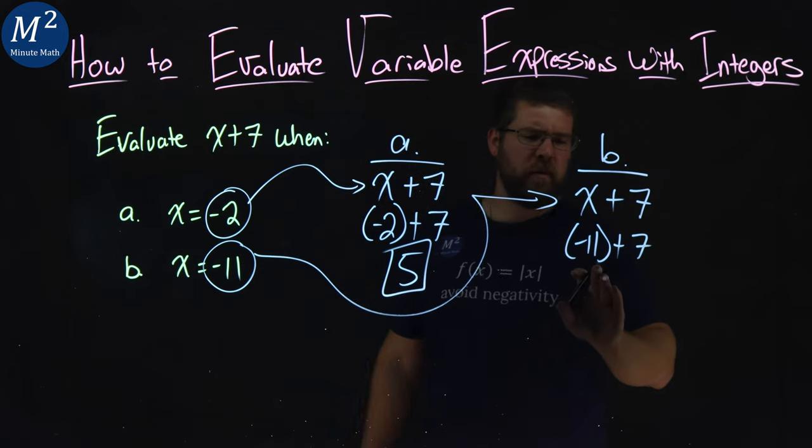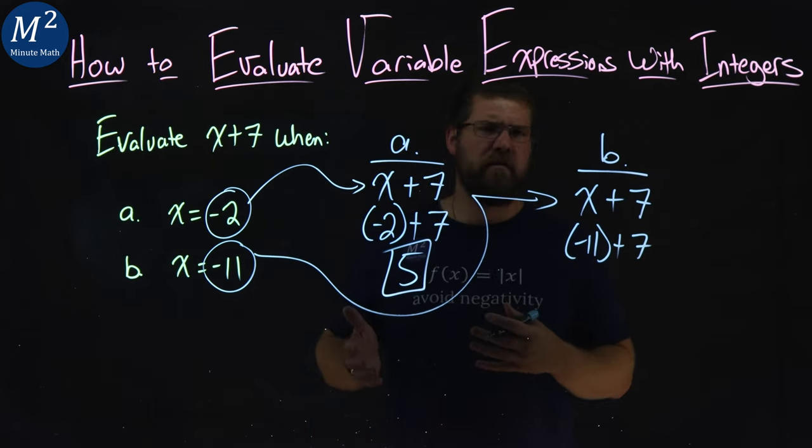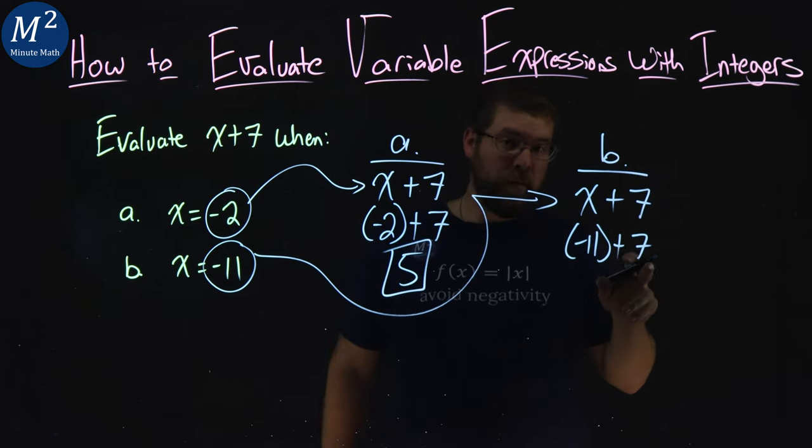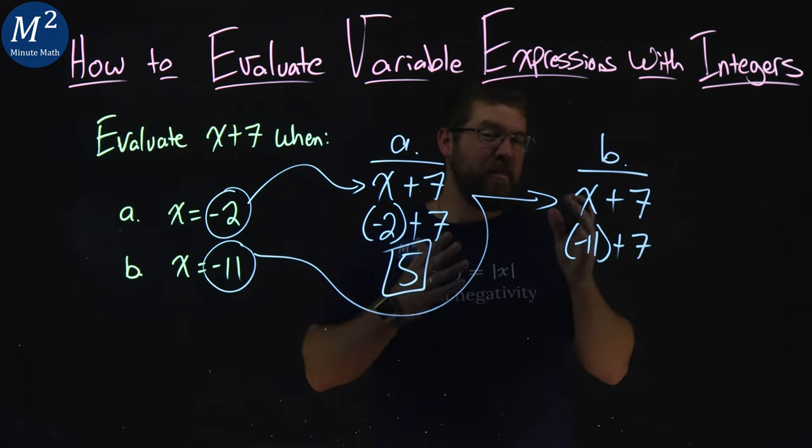Now if you're like me, this always gives me a little pause. Negative 11 plus 7, how do you add that? Well, negative 11 is a larger number, or more negative, than 7 is positive, meaning that our final solution here is going to be negative.